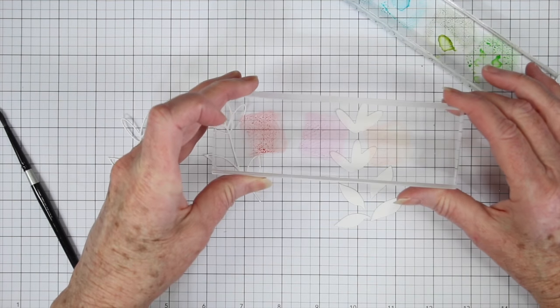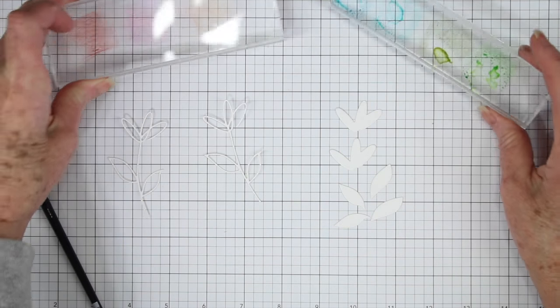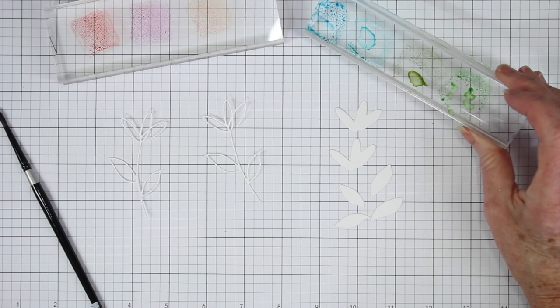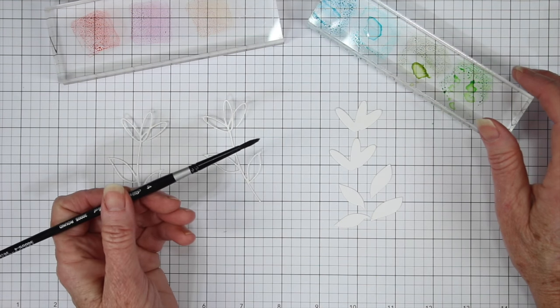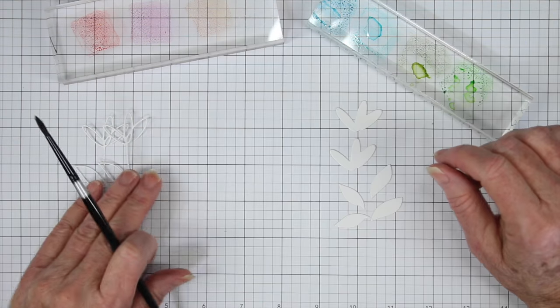For the blossom of my flower, I've chosen ripe persimmon, picked raspberry, and spiced marmalade, and I'll be using the leftover greens for my leaves. I'm also using a smaller paintbrush to get into these smaller areas.